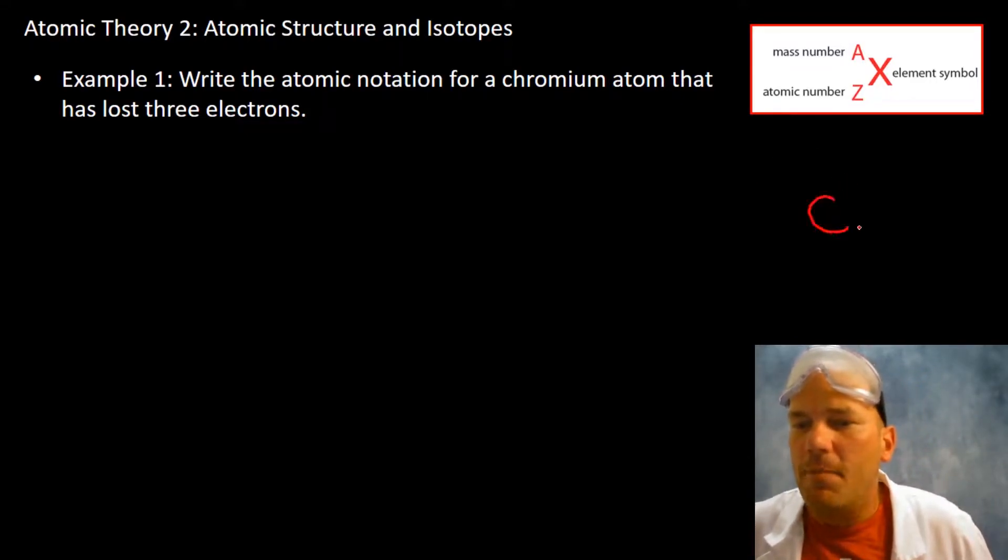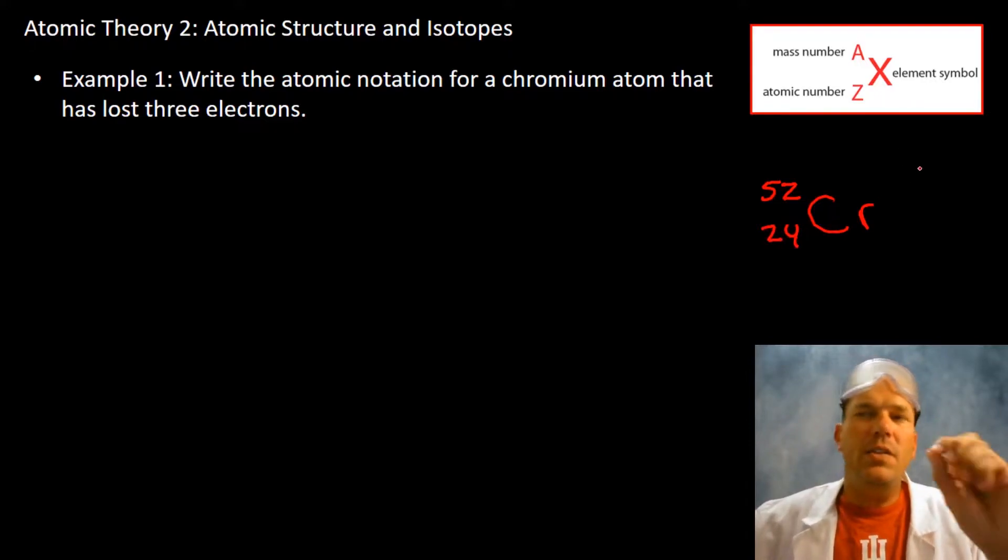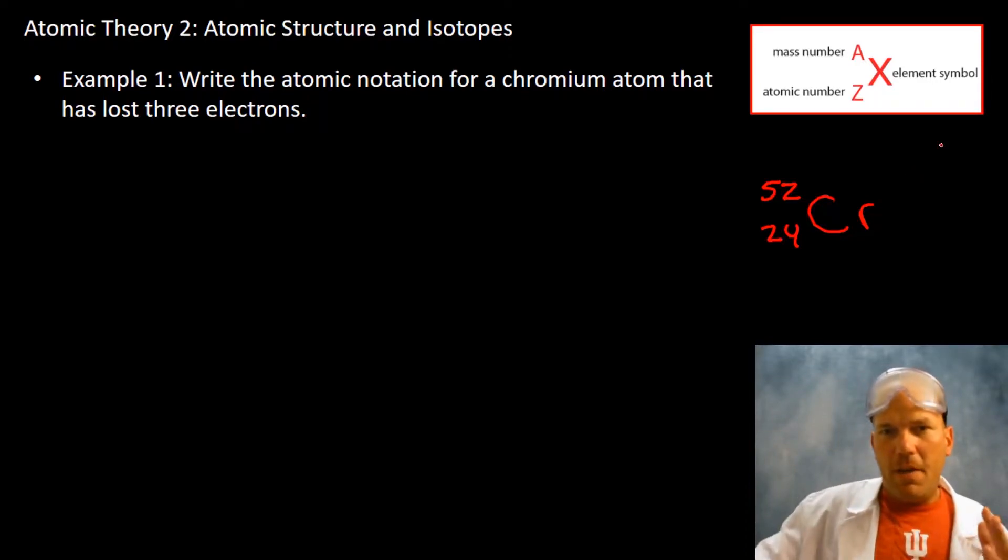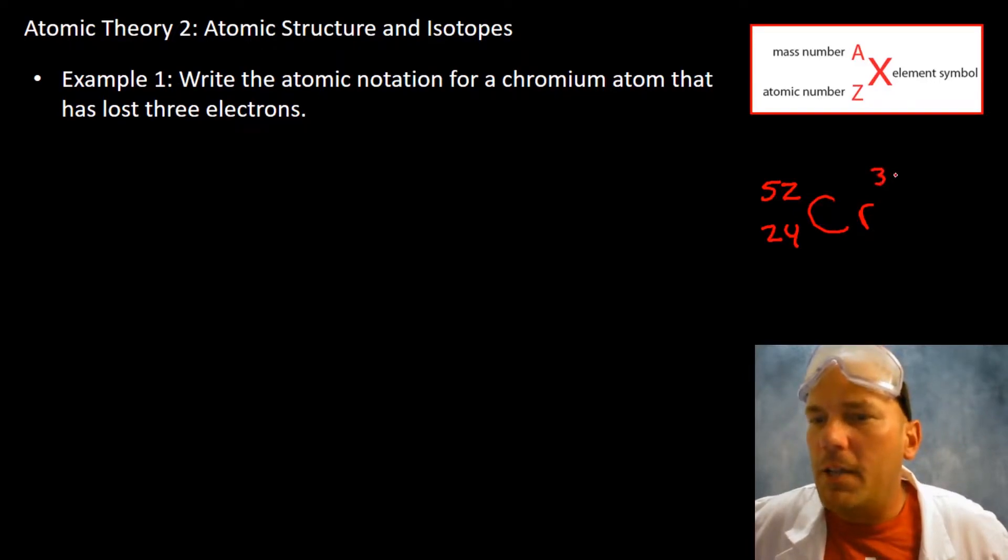Let's do that real quick. Get out your periodic table and look at the mass of chromium: 52.00, and the atomic number for chromium is 24.00. It has lost three electrons, so it's given away three negatively charged subatomic particles, leaving it with a net positive charge, and we're going to write that as a superscript just like that.